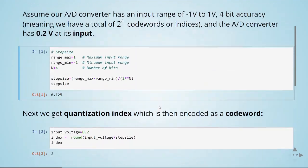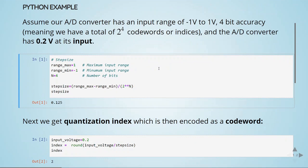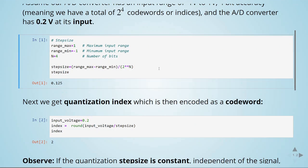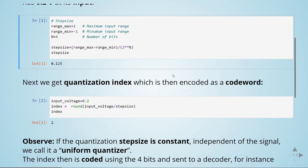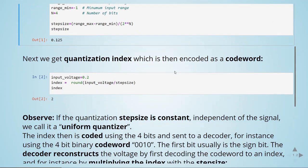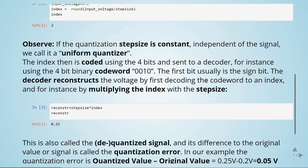We've seen that using a uniform quantizer in this example. We have a step size. Then we quantize the input voltage into an index. The index is coded in a code word. And it's then reconstructed by multiplying the index by a step size. And we always have quantization errors.